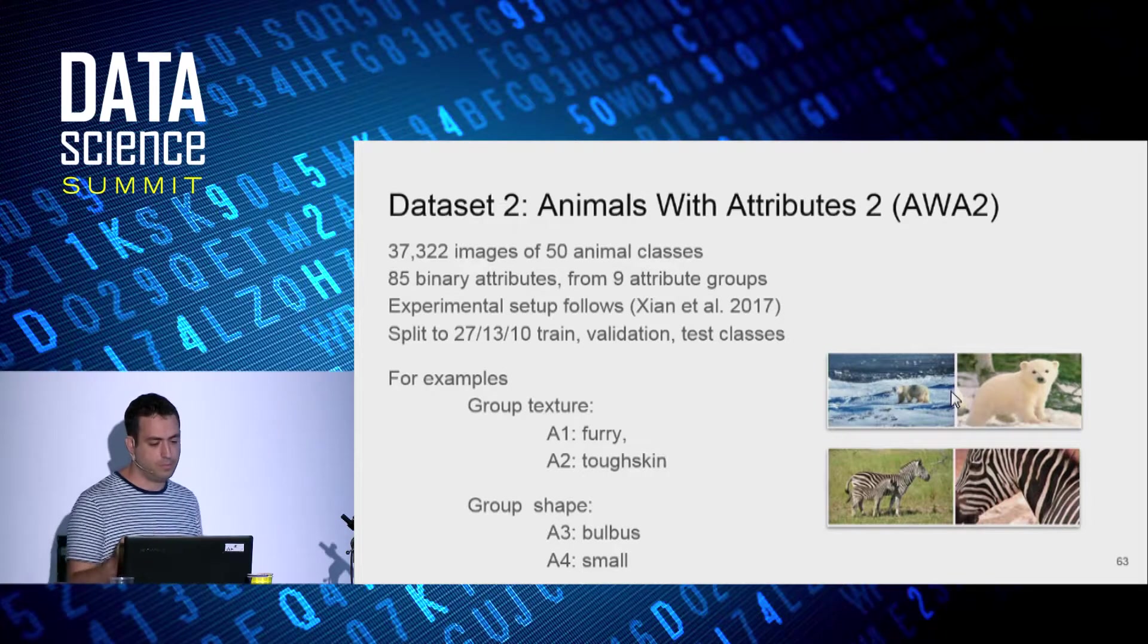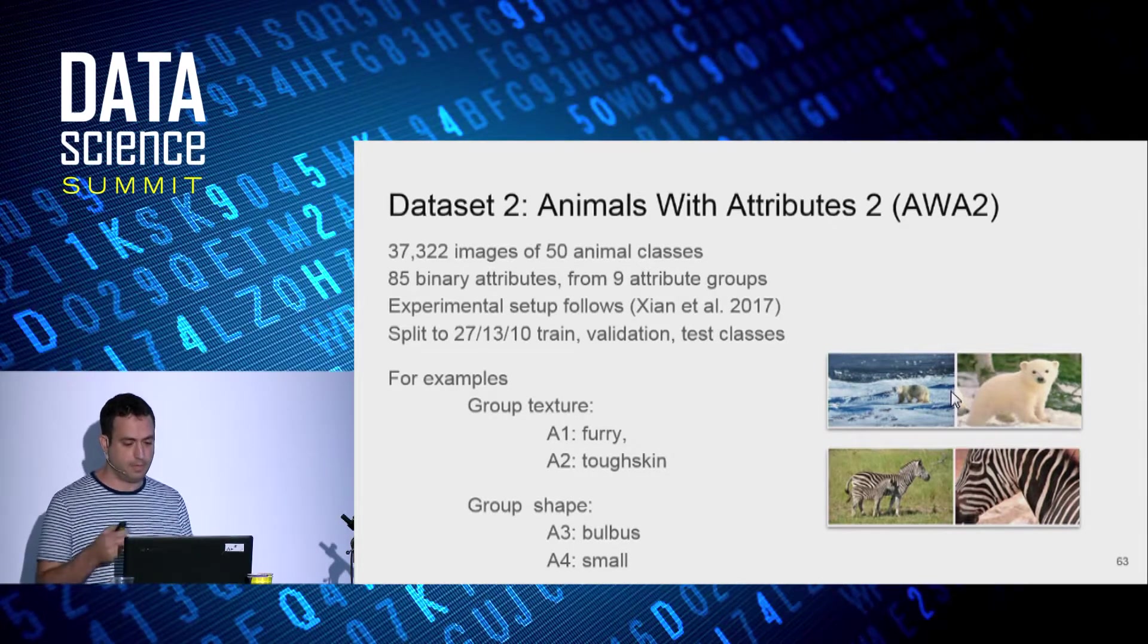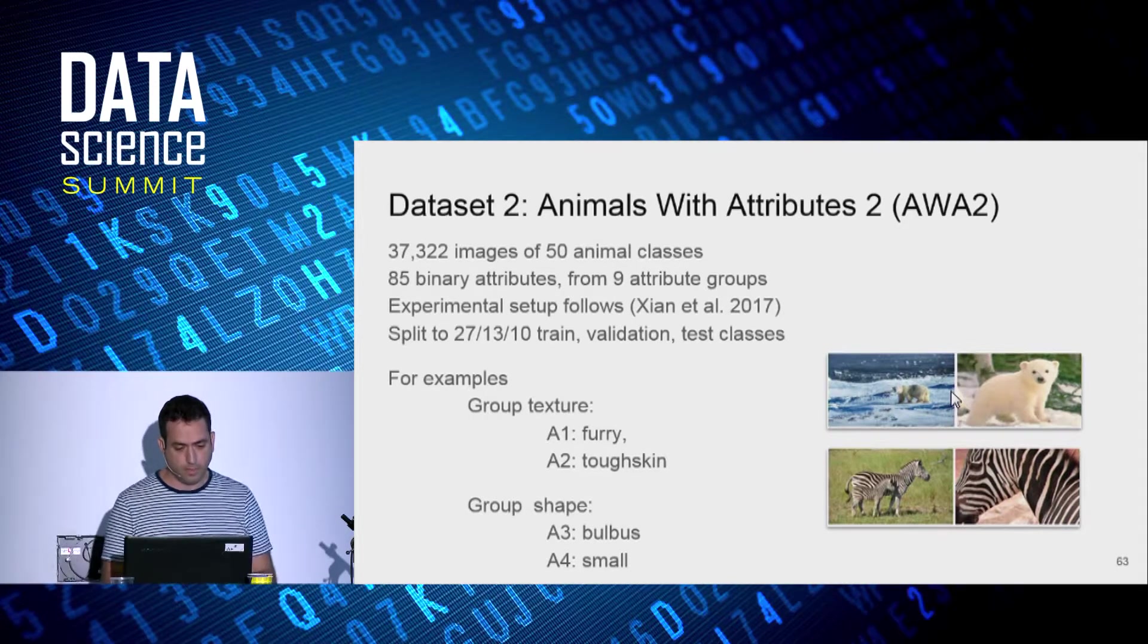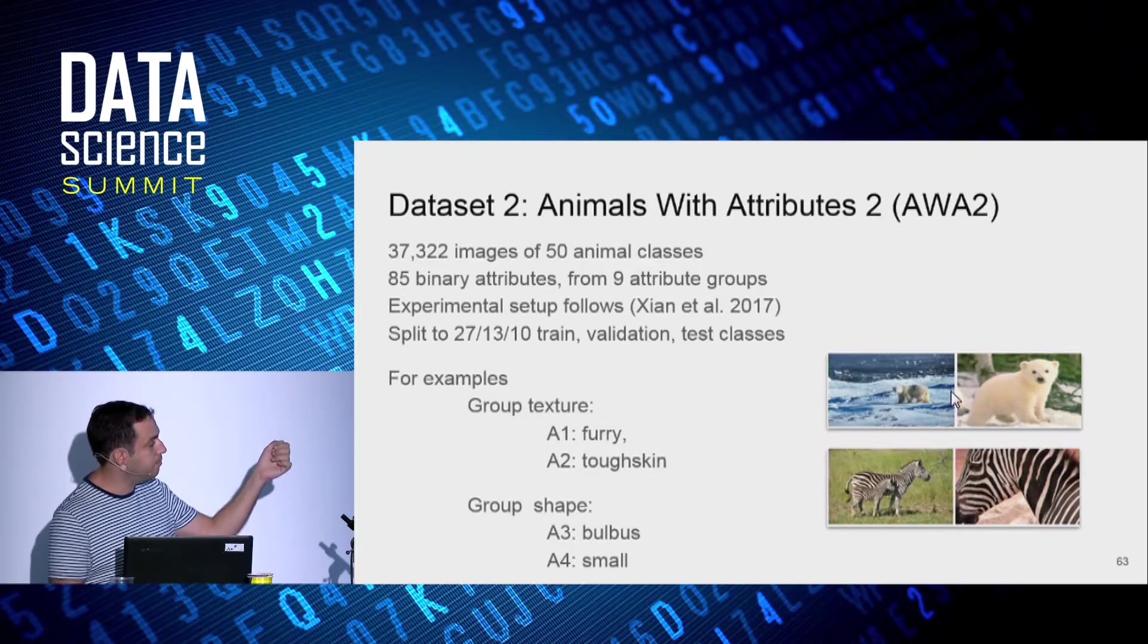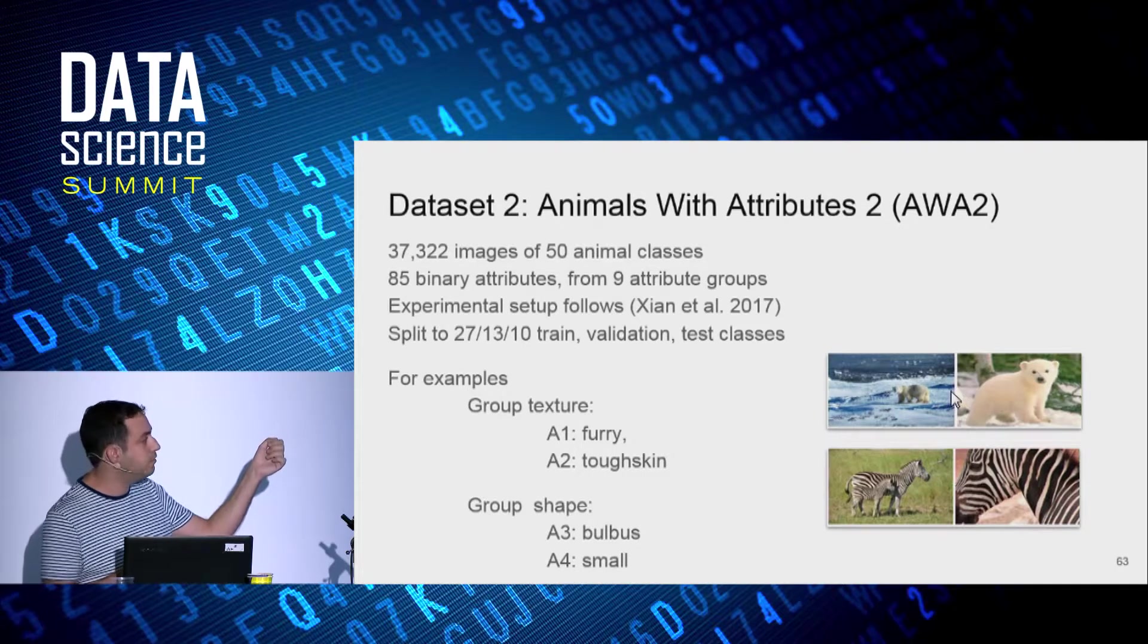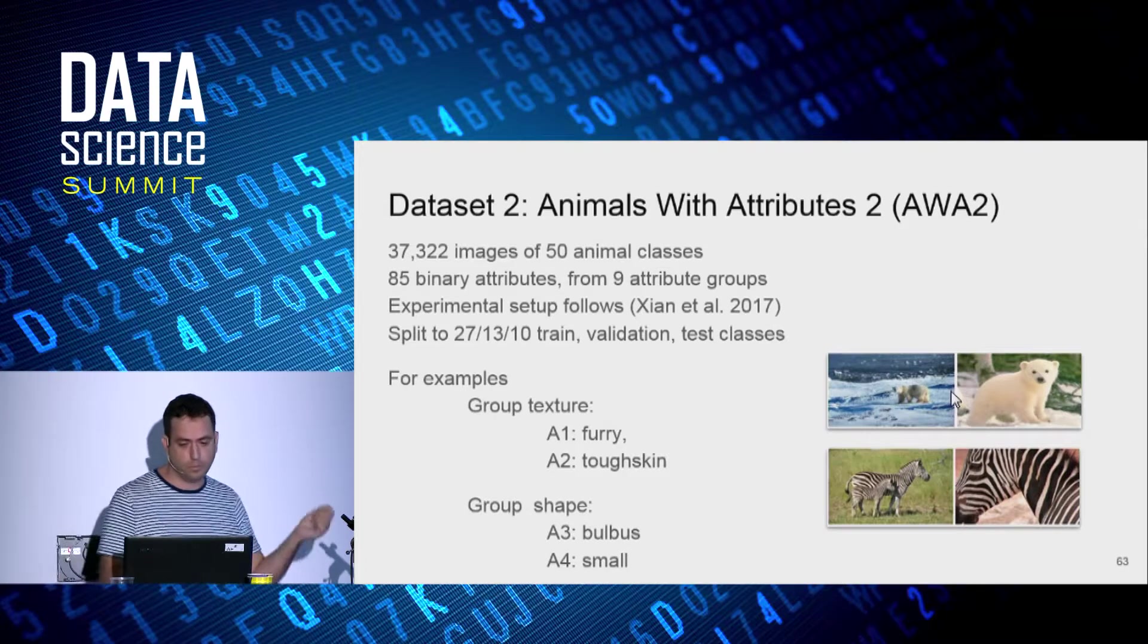Similarly, Animals with Attributes, AWA, is a dataset of animals, mostly mammals. It has 50 animal categories, 85 attributes, and 9 groups. Here also, attributes are like furry, tough skin, bulbous, small, which is... and also has the is-a relationship. Like furry is a texture, and small is a shape, or bulbous is a shape.